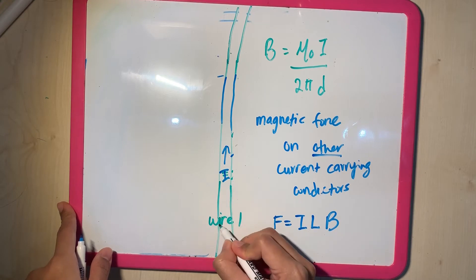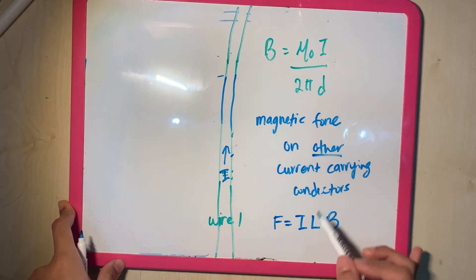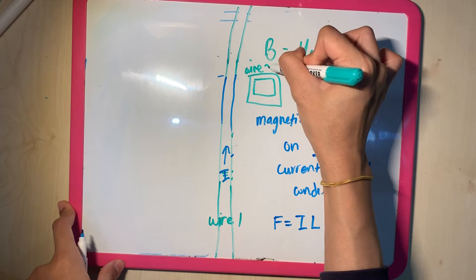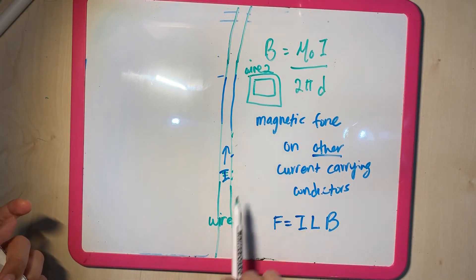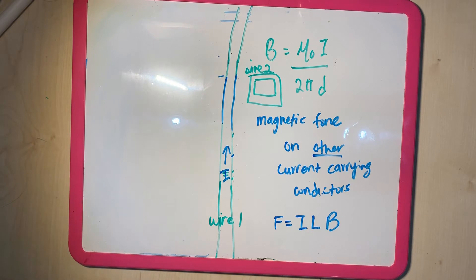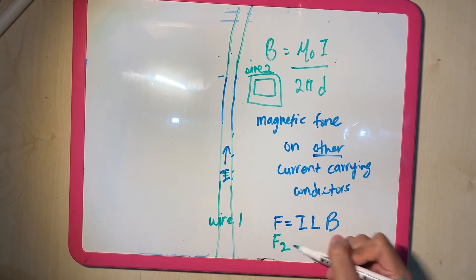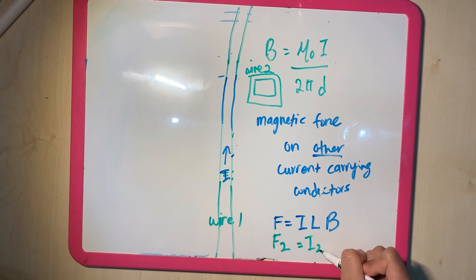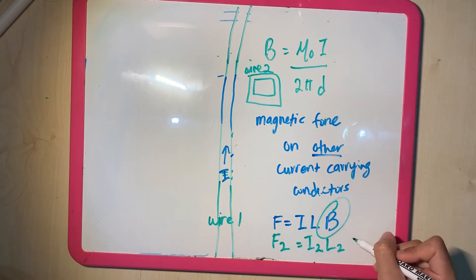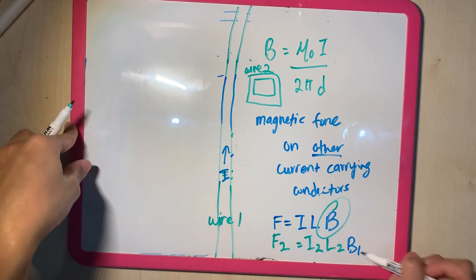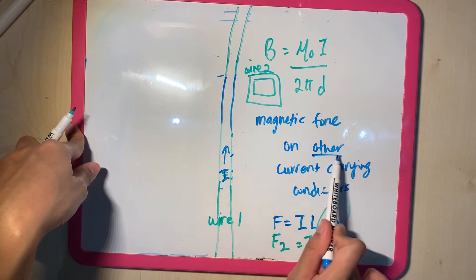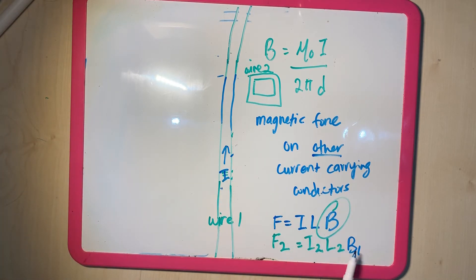If this is wire 1 and my square loop is wire 2, then the force equation becomes F2 = I2·L2·B1. This guy is not B2, it is B1. Because the magnetic force is produced by the B from wire 1 acting on other current-carrying conductors. So the force is actually from B1.